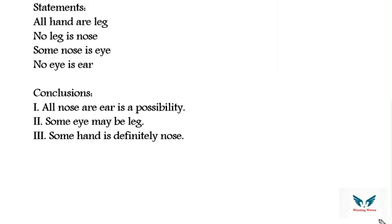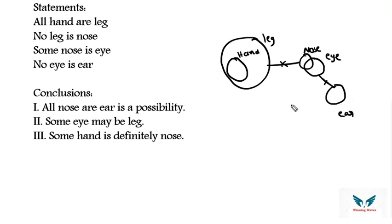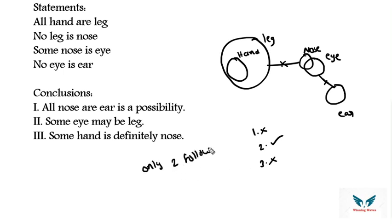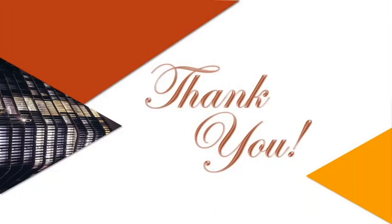Q3: All hand are leg; no leg is nose; some nose is eye; no eye is ear. Conclusion 1 — all nose are ear is a possibility: we cannot say this, so false. Conclusion 2 — some eye may be leg: we can draw eye towards leg, so true. Conclusion 3 — some hand is nose: we cannot say this, so false. Answer: only conclusion 2 follows. Thank you everyone, keep watching our channel.